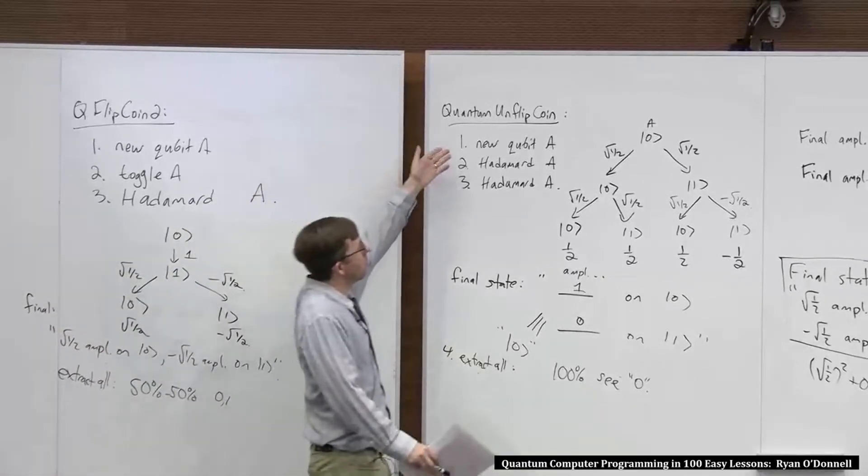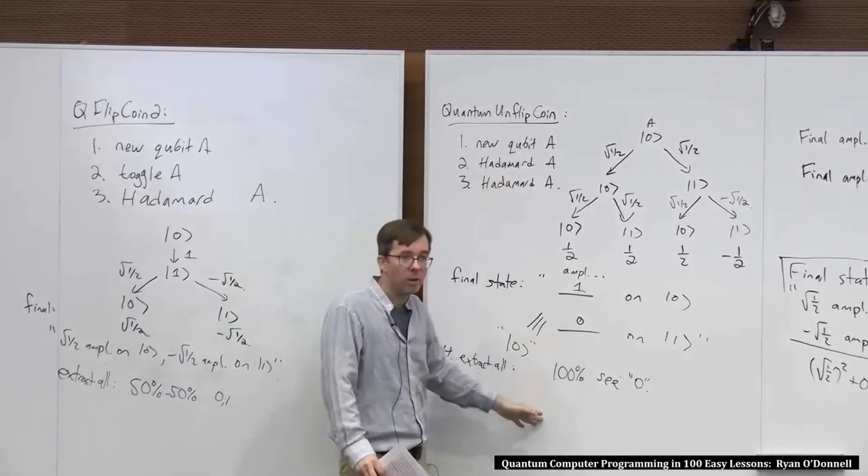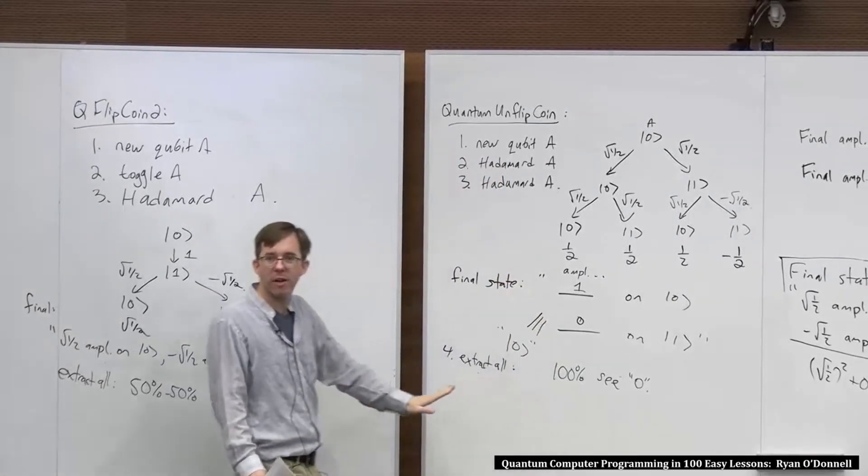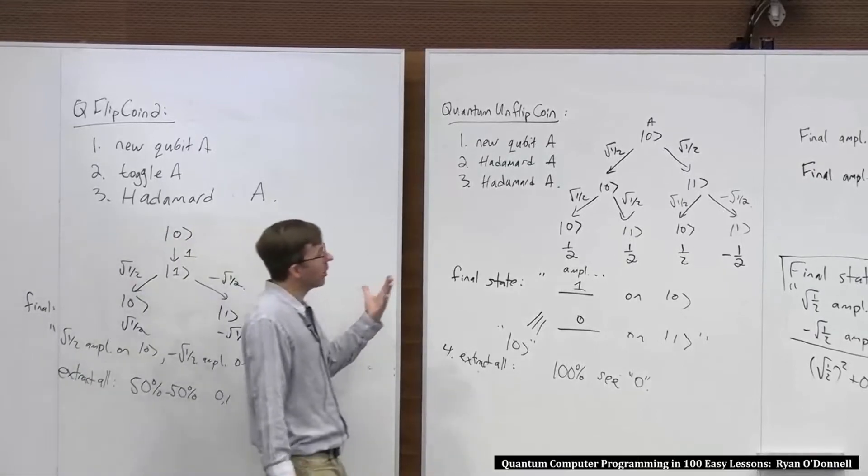And this might refute your hypothesis, if you had it before, that Hadamard just takes a bit and randomizes it. Because we randomize it, we randomize it again, it should still be 50-50, but it's not. You run this code, 100% of the time you see zero. You do this physical experiment, you always see zero.